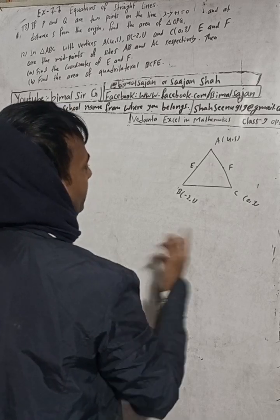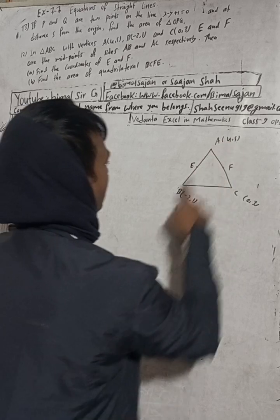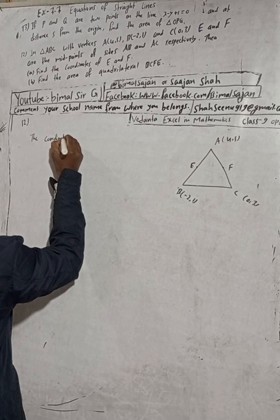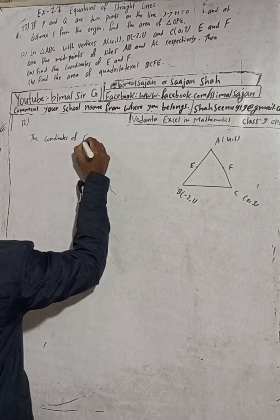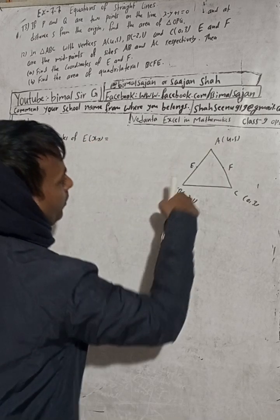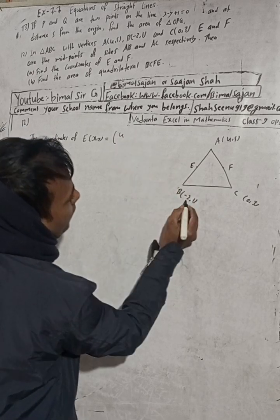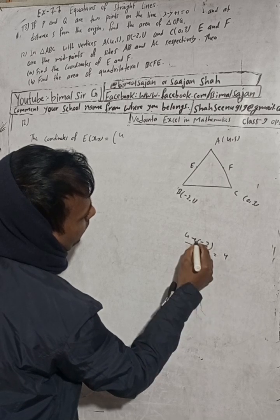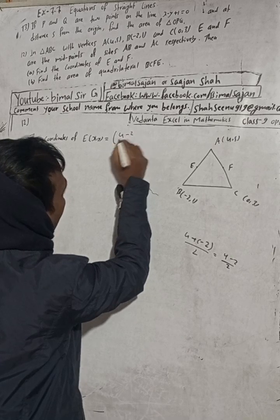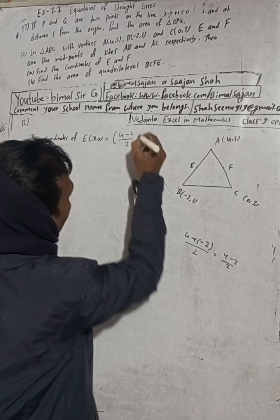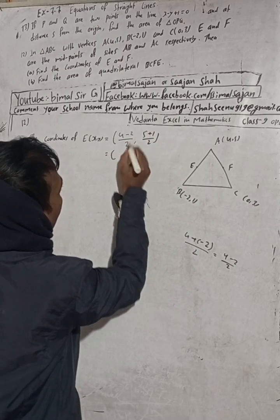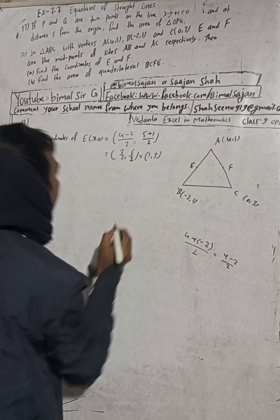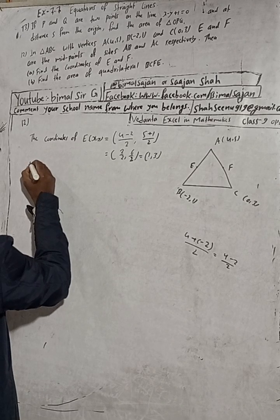Since E is the midpoint, the coordinates of E (x,y) equal, using the midpoint formula: (4 + (-2))/2, (5 + 1)/2. This equals (4 - 2)/2, 6/2, which gives us 2/2, 6/2, which equals 1, 3.